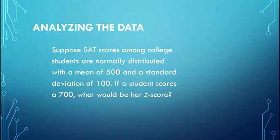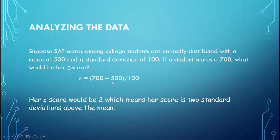You don't even probably need a calculator for this one. But suppose SAT scores among college students are normally distributed with a mean of 500 and a standard deviation of 100. If a student gets a 700, what would her z-score be? So thinking back to that formula, a z-score is equal to the person's score, which in this case is 700, minus the mean, which is 500, divided by the standard deviation, which is 100. So 700 minus 500 over 100. If you do that, 700 minus 500 divided by 100, that gives us a z-score of 2.